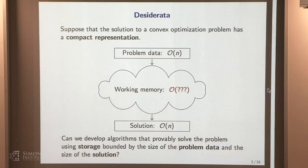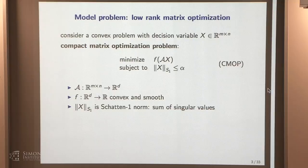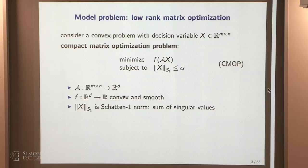I'm not going to solve the general question. Instead, I'll stick to a subclass of problems with interesting structure. We consider a convex optimization problem with an n-by-n matrix decision variable X. The problems minimize some function F of a linear map A applied to X, subject to a constraint on the Schatten 1-norm of X — the sum of singular values, also known as the trace norm or nuclear norm.